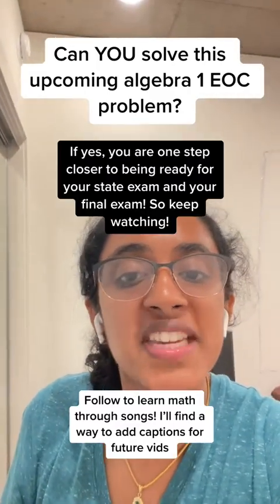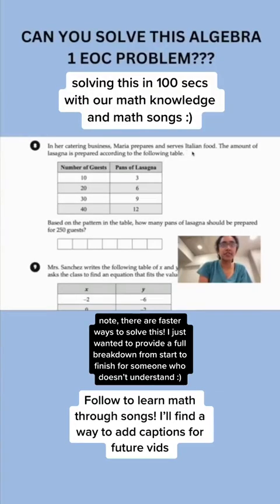Can you solve this Algebra 1 EOC problem? Maria prepares and serves Italian food. The amount of lasagna prepared is according to the following table: 10 guests, 3 pans of lasagna; 20 guests, 6 pans; 30 guests, 9 pans; and 40 guests, 12 pans of lasagna. Based on what we're seeing here, we need to find the rate of change.